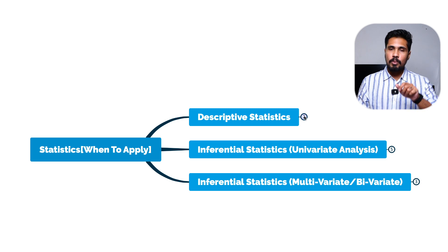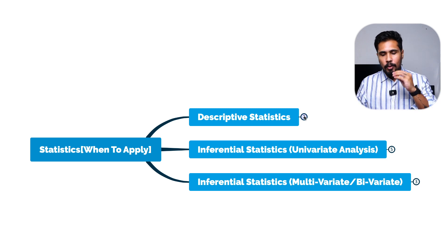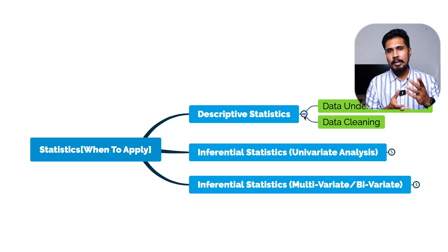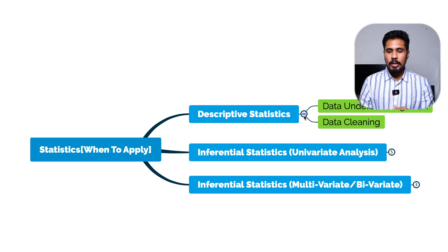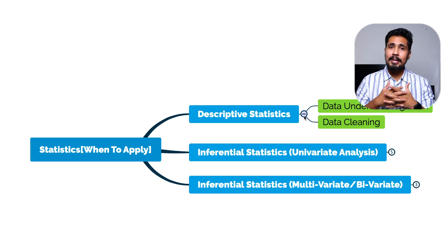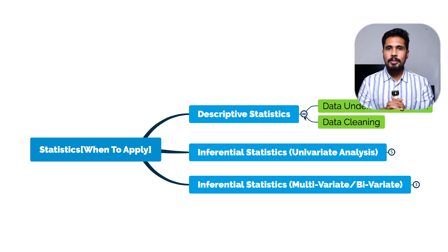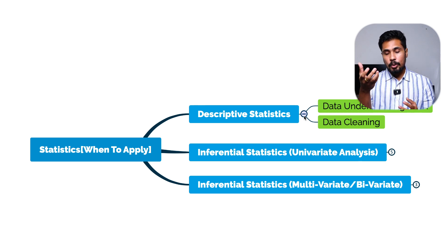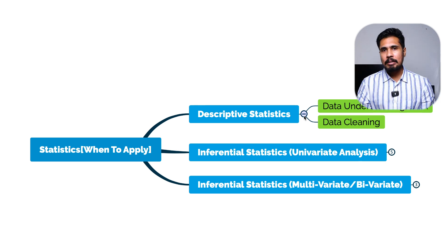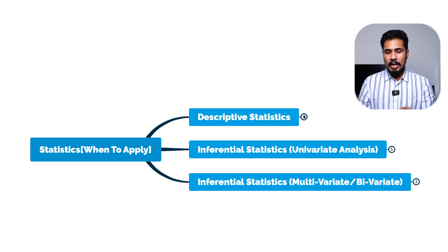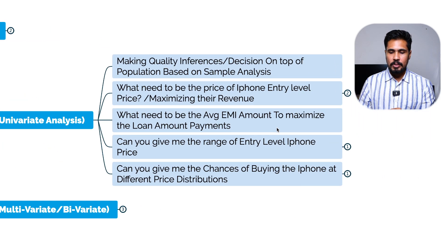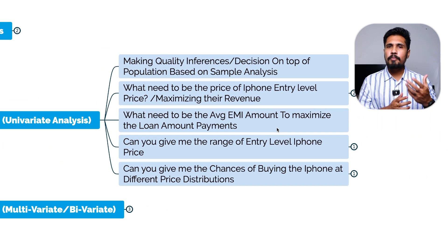Descriptive statistics is used when your goal is data understanding — as a data scientist, AI professional, or data analyst. You use it to perform EDA (exploratory data analysis), and then based on your data understanding from descriptive statistics, you perform data cleaning operations using Python. That's where we use descriptive statistics.